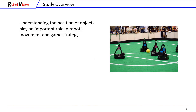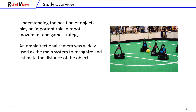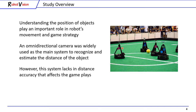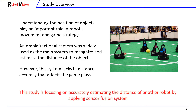Next, I will be presenting the main topic of this video challenge about our latest research. In RoboCup, understanding the position of objects such as robots and balls plays an important role in robot movement and game strategy. In this case, an omnidirectional camera was widely used as the main system to recognize and estimate the distance of objects. However, by just using this single system, it lacks distance accuracy that affects gameplay. The purpose of this study is to accurately estimate the distance of another robot by applying a sensor fusion system.